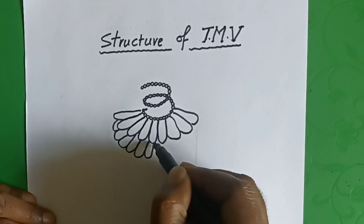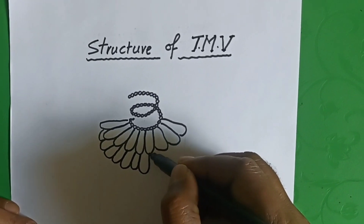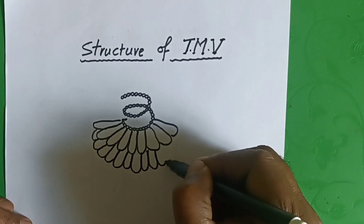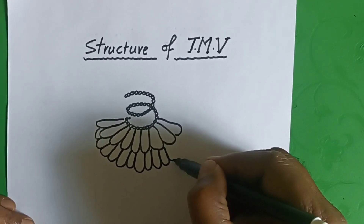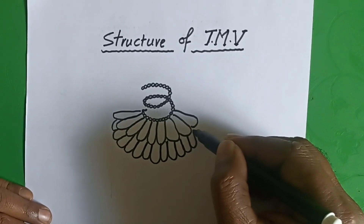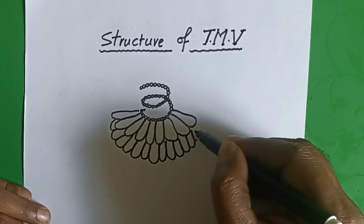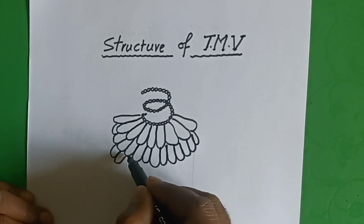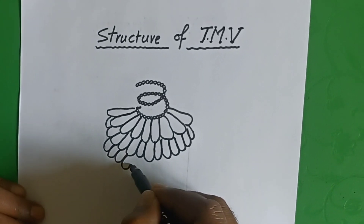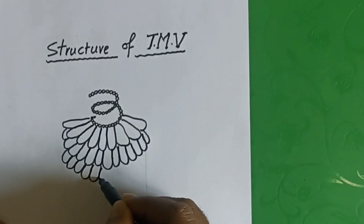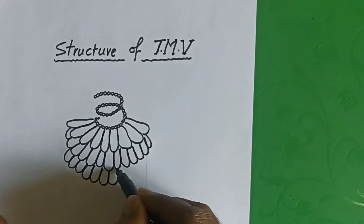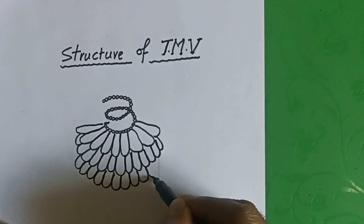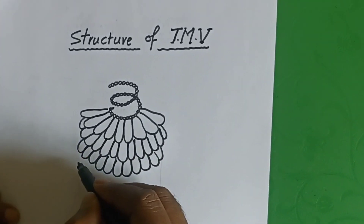This is a very important question for intermediate second year students. Just follow the video on how to draw the structure of TMB. Generally it looks very complex to draw, but when you draw it step by step it is very easy if you follow this video.